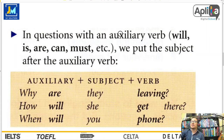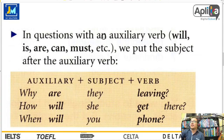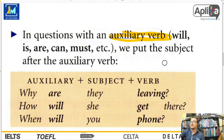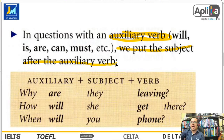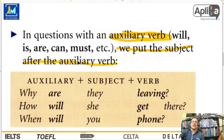In questions con verbo to be ponemos el sujeto después del to be. Y con preguntas que contienen un auxiliar — como do, does, el presente continuo, el futuro, o un modal verb — nosotros ponemos el sujeto después del auxiliar. A diferencia de lo anterior, donde el sujeto iba después del verbo to be, aquí va después del auxiliar.